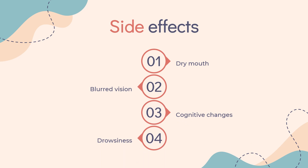Side effects. These are principally anticholinergic and include dry mouth, blurred vision, cognitive changes, drowsiness, constipation, urinary retention, tachycardia, and anorexia. Severe delirium and hallucinations may occur in overdose.